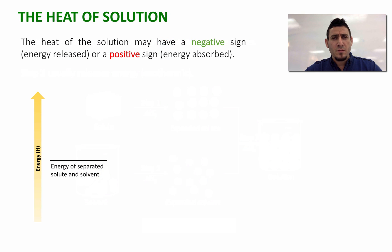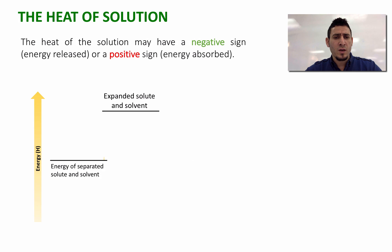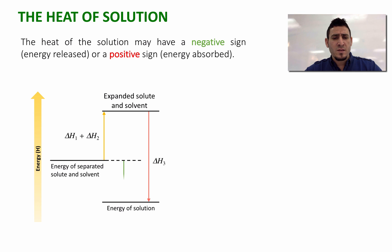The heat of the solution may have a negative sign or a positive sign. As we know, energy is required to expand the particles, and this energy is equal to ΔH1 plus ΔH2. When the solution forms, energy is going to be released. In this example, the energy released is greater than the sum of ΔH1 plus ΔH2. In this case, the sign of ΔH_solution is going to be negative, and therefore ΔH_solution is negative and the solution is favored to form.